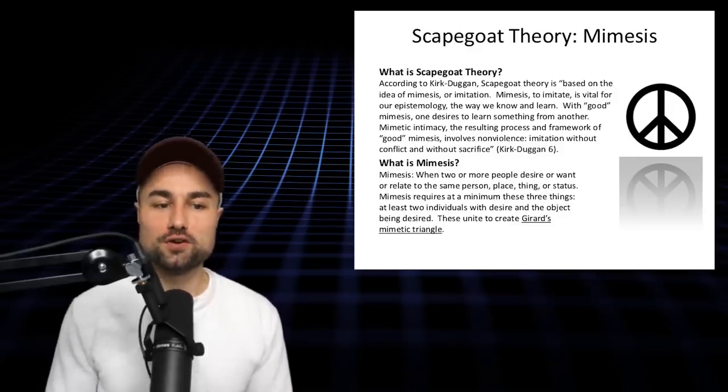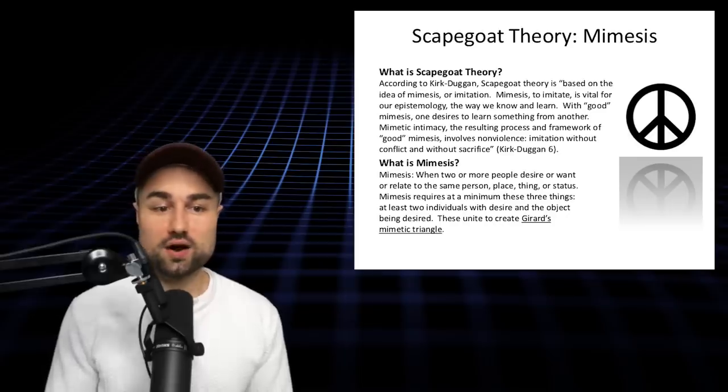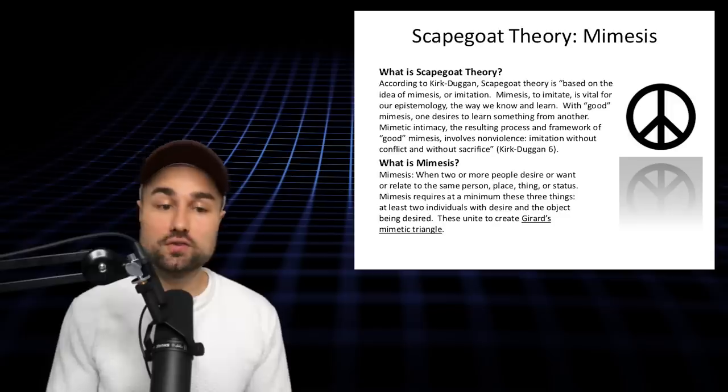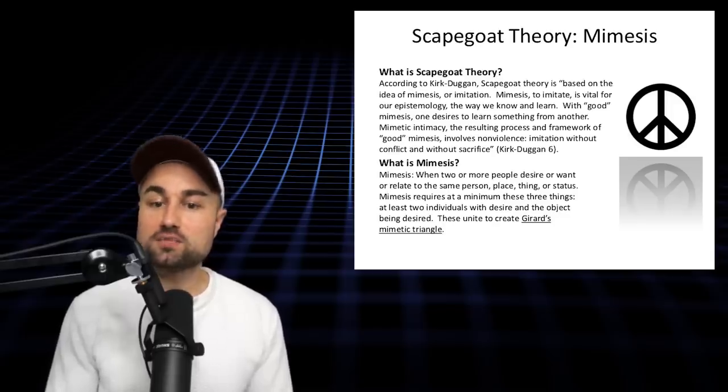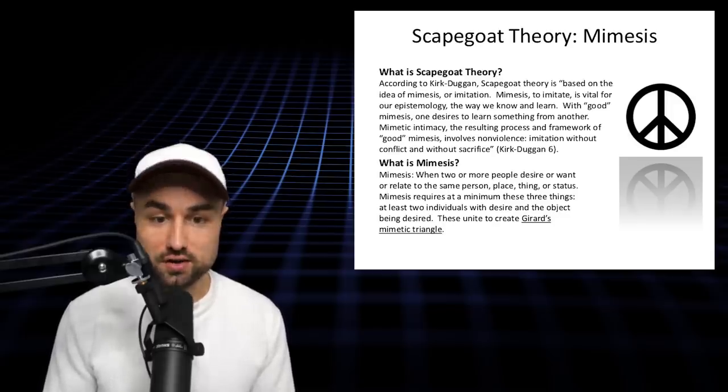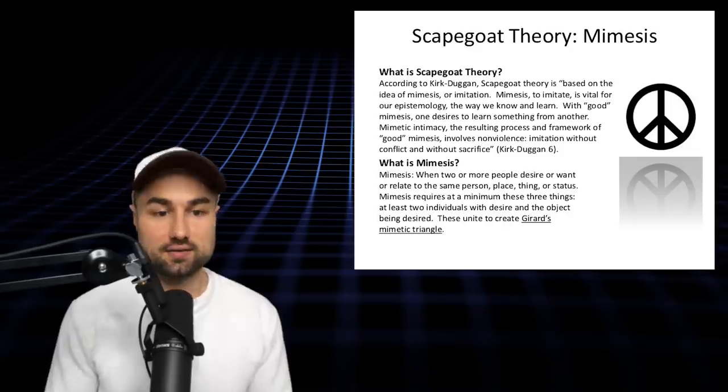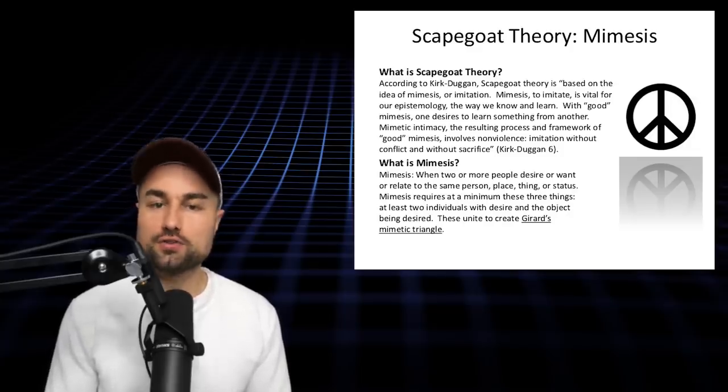This unfortunate person may or may not be guilty. All that's required for the scapegoating solution to work is that his guilt is universally agreed upon and that when he is punished or expelled from the community, he will not be able to retaliate. The proof of his guilt is found in the peace that now returns to the community.